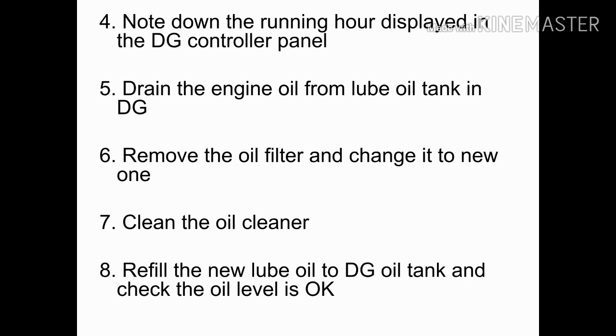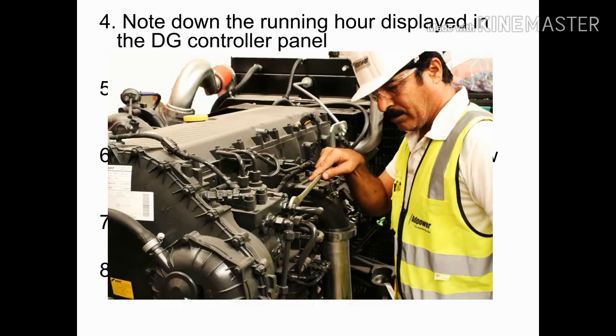The first process is draining the engine oil from the lube oil tank. After 400 running hours, the DG lube oil color typically turns black. Every 400 hours, the first task is to drain the old lube oil from the tank and refill it with new lube oil.